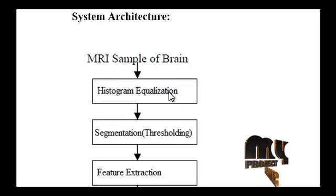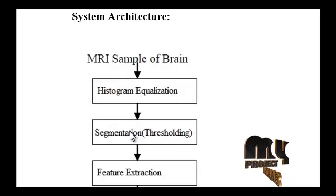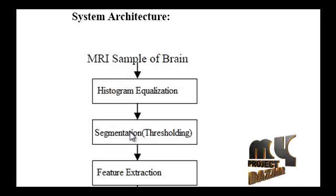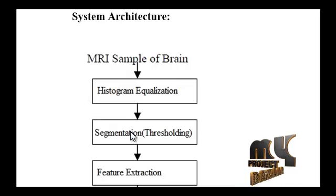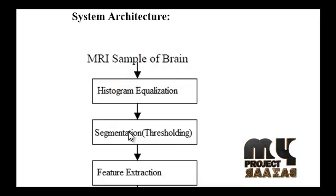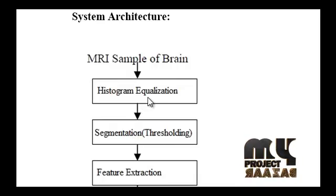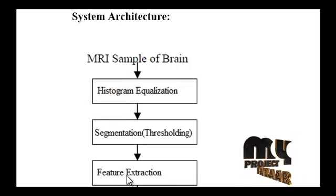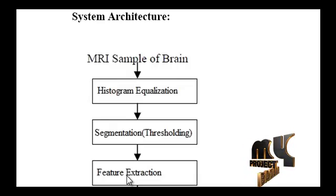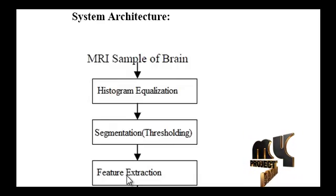Then the enhanced image is passed for segmentation. For segmenting the image, we are using the global thresholding method. Then we extract the tumor portion, and the enhanced image is passed for feature extraction using GLCM to extract texture features from the MRI brain image.